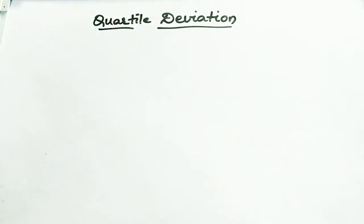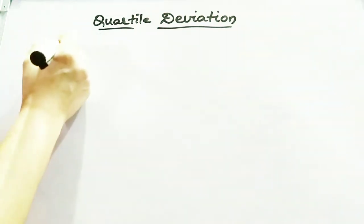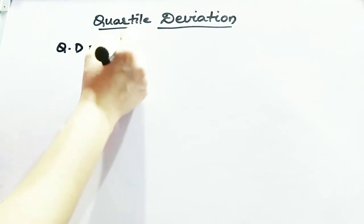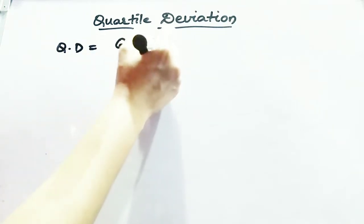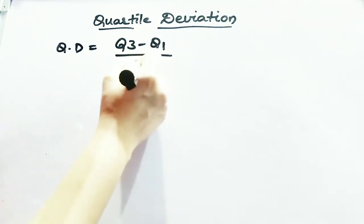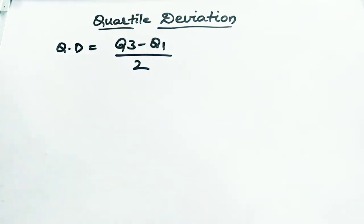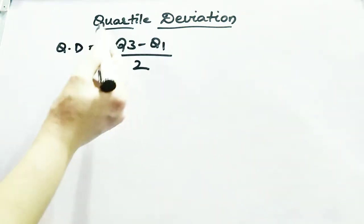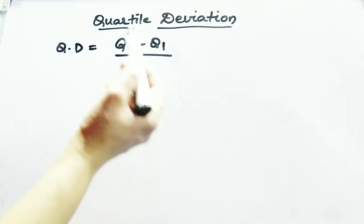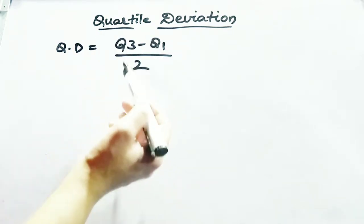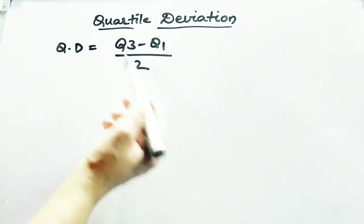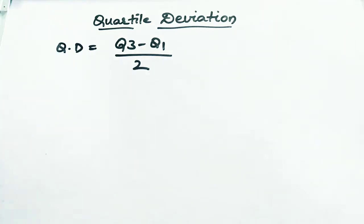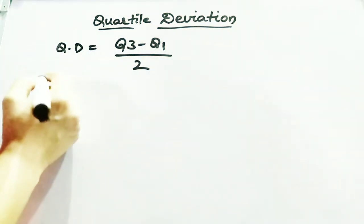What is quartile deviation? The formula for quartile deviation is Q3 minus Q1 upon 2. The difference between Q3 and Q1 is called the inter-quartile range. If you divide the inter-quartile range by 2, you will get the quartile deviation.